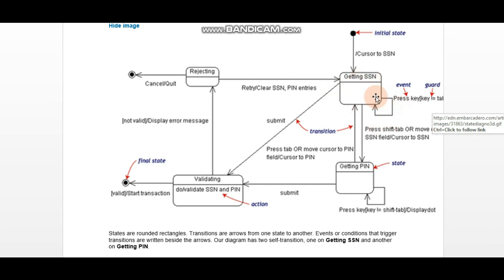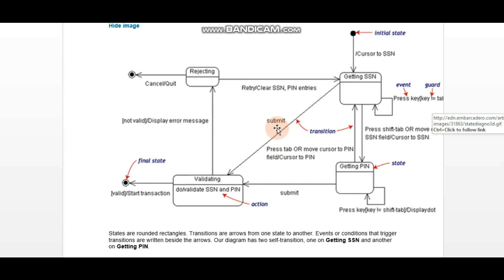The social security number entry includes a guard — an expression that indicates an event. If this event is performed, it results in a self-transition. Otherwise, if you submit, that event is written on the arrow line. After getting the SSN, it will go to validation to validate the SSN and PIN. If the transaction doesn't start, it will go to the final state.